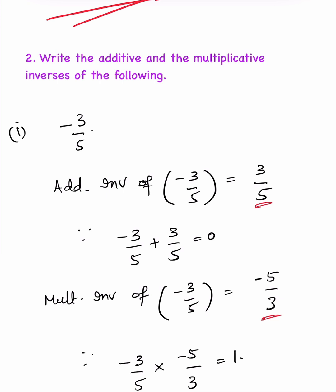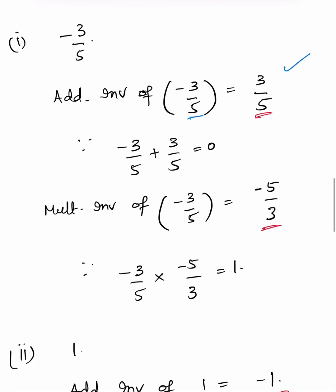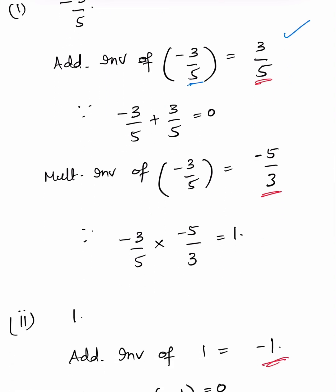First, -3/5. The additive inverse of -3/5 is +3/5, because -3/5 + 3/5 = 0. The multiplicative inverse of -3/5 is -5/3, because -3/5 × (-5/3) = 1. Therefore, the multiplicative inverse is -5/3.